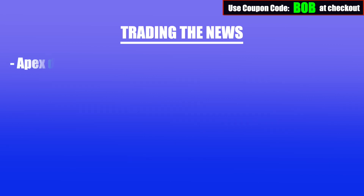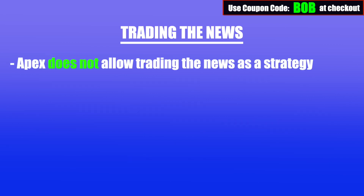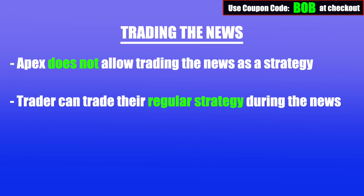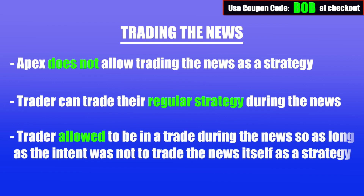Lastly, let's talk about trading the news. Apex does not allow trading the news as a strategy. If you're simply trying to trade the massive volatile spikes when news is released, that is not allowed. However, as long as you're trading your consistent strategy, you are allowed to do so during the news. For example, if you're trading crude oil using Fibonacci retracements — buying at key support levels — and the crude oil inventories news gets released within the same hour you're in the trade, that's perfectly fine. But purposely trying to ride the spikes right when news is released as your strategy is not allowed.